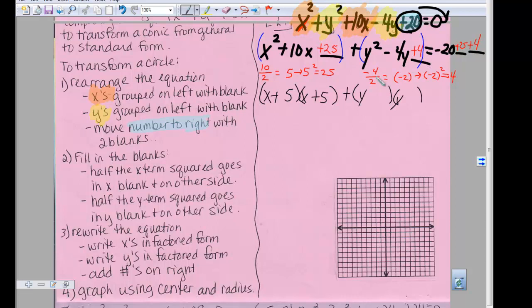Okay, so now we're going to take and we're going to do step number three, rewrite the equation, and we're going to write the x's in factored form, the y's in factored form, and add the numbers to the right. So we are going to be taking care of the x's in factored form, the y's in factored form, and we're going to do the numbers on the right.